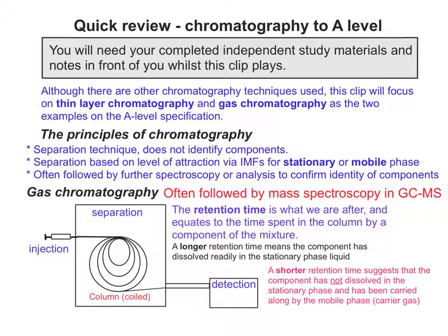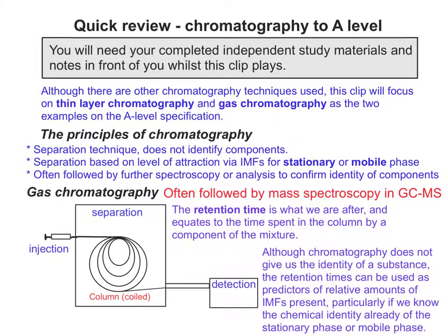It's worth being careful here — gas chromatography is often followed by mass spectroscopy, so absolute identification has to be done by another method. This is purely a separation method. Quite often, the structure we deduce using chromatography combined with spectroscopy is supported by the retention times, which indicate the likely intermolecular forces associated with that structure, particularly if we know the chemical identity of the stationary and mobile phases already.